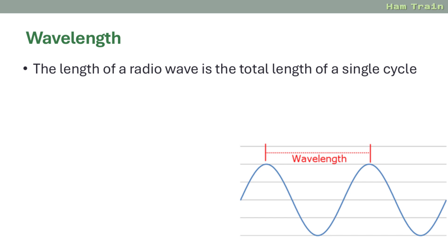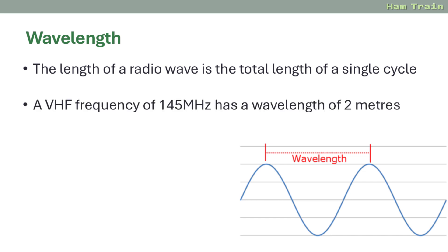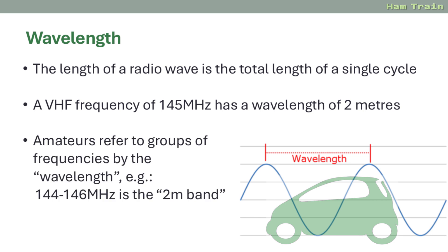We move on to some radio fundamentals now, looking at wavelength and frequency. The length of a radio wave is the total length of a single cycle — measuring from one peak to the next peak gives us the wavelength. Looking at a common VHF frequency of 145 MHz, the length of the wave is 2 metres. For convenience, radio amateurs refer to groups of frequencies by their wavelength, so the 144 to 146 MHz band is often referred to as the 2 metre band.